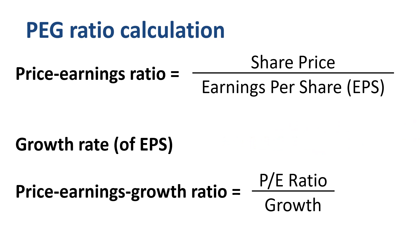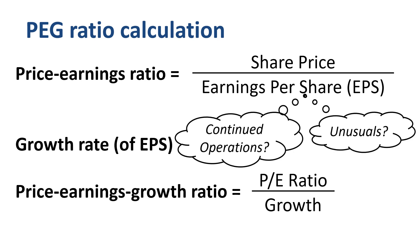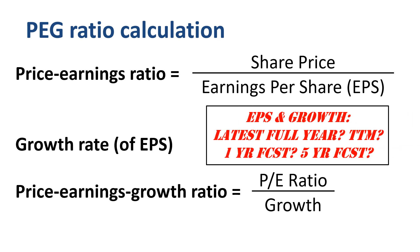For earnings per share, the default choice would be the GAAP EPS number, but there are those who would take the EPS from continued operations, or the adjusted EPS, excluding any unusual items. For both EPS and growth rate, we need to decide which time horizon to use: the latest full year historical EPS and growth rate, rolling EPS and growth rate based on trailing 12 months (the latest four quarters), expected EPS and expected growth for the next year, or even a 5-year average expected growth rate.